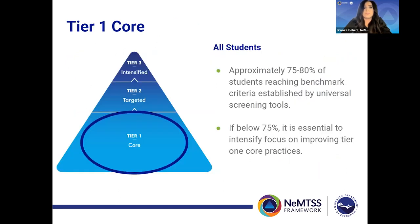MTSS is how we organize the supports we provide for students. We identify those supports through a layered continuum that recognizes what we do for all students, for some students, and for a few students. We know that by establishing our Tier 1 supports through effective instruction and high-quality instructional materials, the majority of our students — about 75 to 80 percent of them — will be successful. Once we are implementing our Tier 1 practices effectively, we can accurately identify those in further need of assistance. If less than 75 to 80 percent of our students are proficient, however, it's essential to intensify our focus on improving Tier 1 core practices.